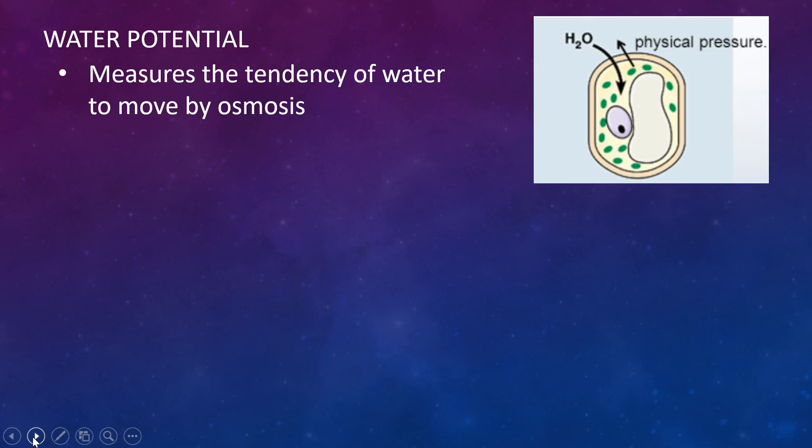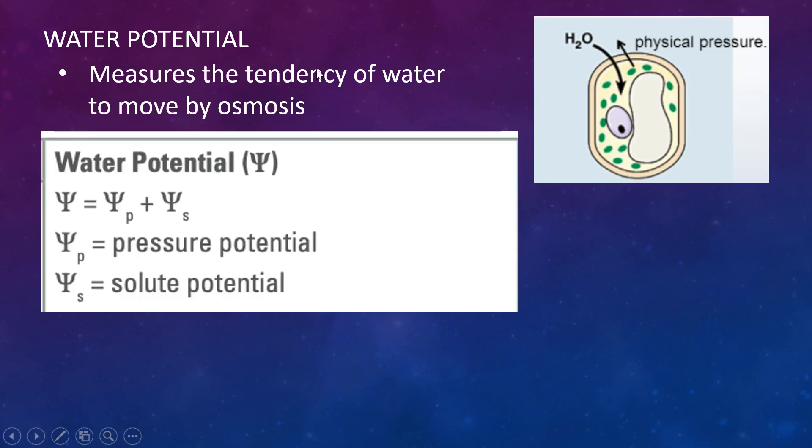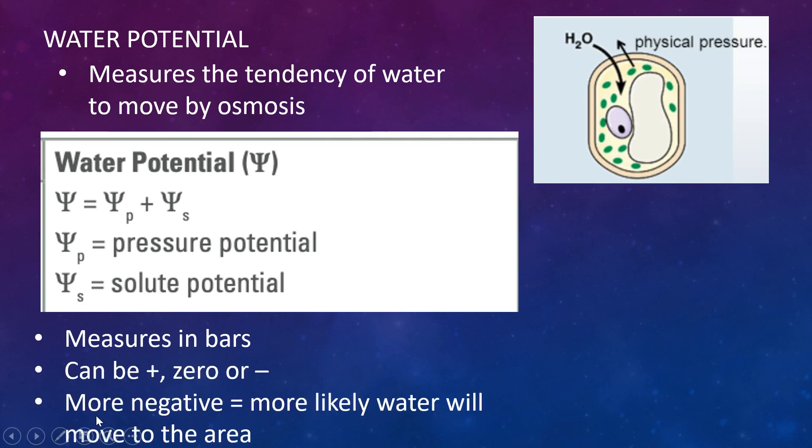So that's osmosis. Now we're going to talk about water potential. Water potential is the tendency of water to move by osmosis, so it's just a way to measure our osmosis. We use these fancy equations, and this is on your equation sheet, so you don't have to remember it, but it's measured in bars. It's a pressure, so we can use bars to measure the pressure. It can be a positive or negative value. The big thing to remember with this is that the more negative the value, the more likely the water is to move to an area.